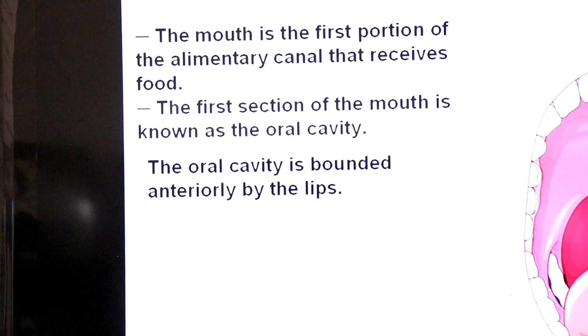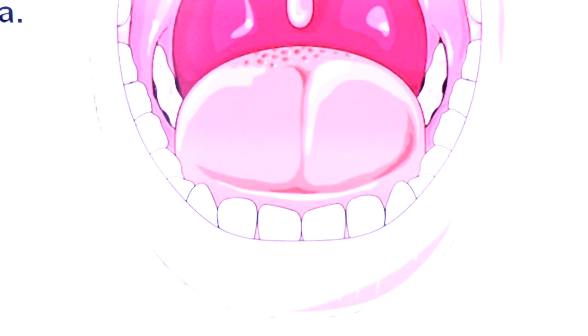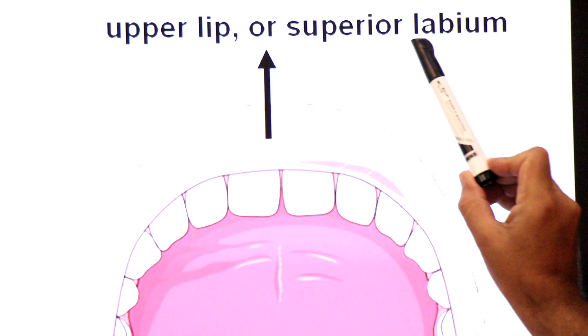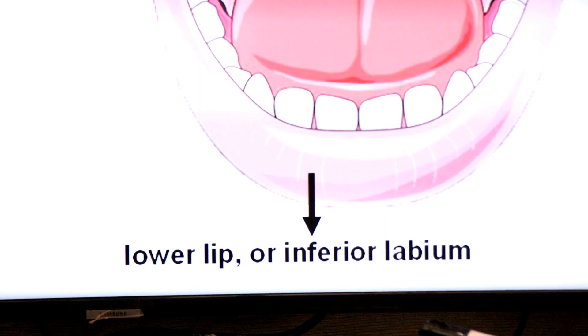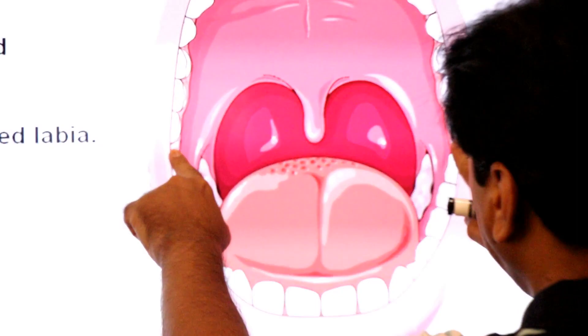The oral cavity is bounded anteriorly by lips. Here you can see the upper lip and the lower lip. These lips are also known as labia. In medical terminology, the upper lip is known as the superior labium, and the lower lip is called the inferior labium. The sides of the oral cavity are bounded by the cheeks, which form the soft lateral walls of the oral cavity.